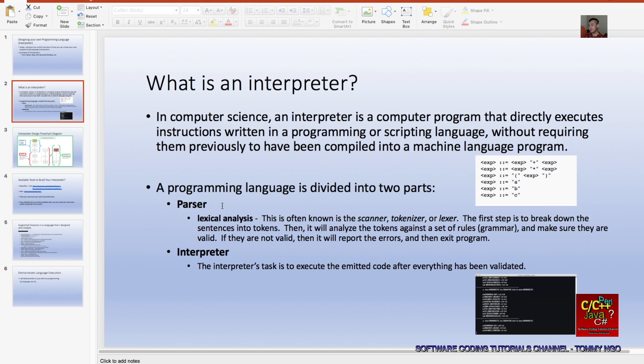So what is an interpreter? In computer science, an interpreter is a computer program that directly executes instructions written in a programming or scripting language without requiring them previously to have been compiled into a machine language program. You can find this definition on Wikipedia.